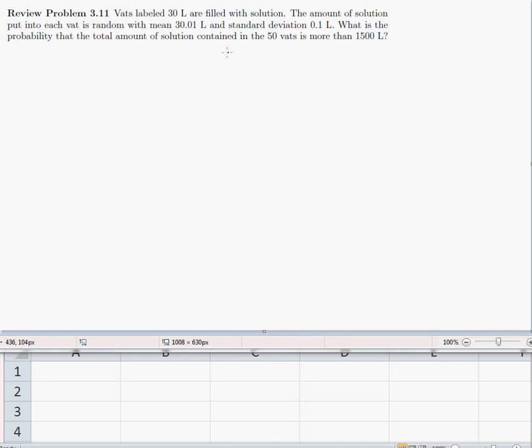We find the probability that the total amount of solution in the 50 vats is more than 1,500 liters. So the probability that the sum is more than 1,500. This is the sum of 50 things, and so the central limit theorem applies.